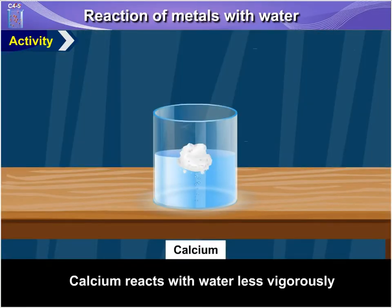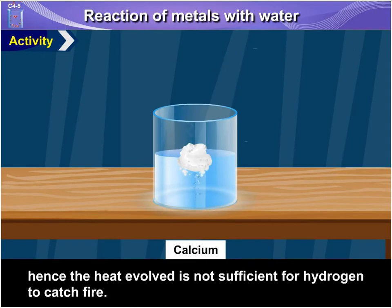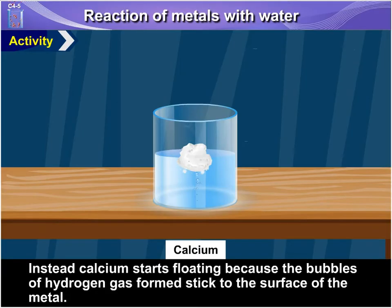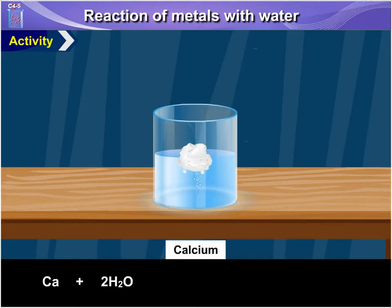Calcium reacts with water less vigorously; hence the heat evolved is not sufficient for hydrogen to catch fire. Instead, calcium starts floating because the bubbles of hydrogen gas formed stick to the surface of the metal. 2Na + 2H₂O → 2NaOH + H₂.